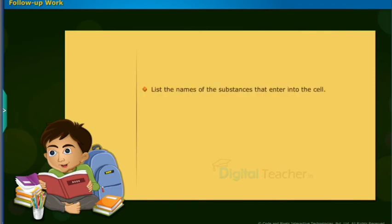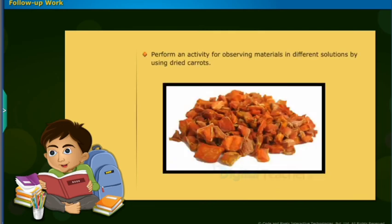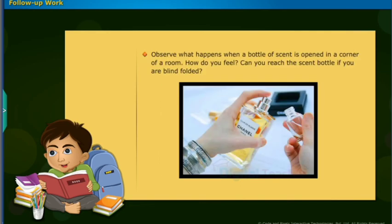List the names of the substances that enter into the cell. For example: oxygen, glucose, etc. Perform an activity for observing materials in different solutions by using dried carrots. Observe what happens when a bottle of scent is opened in a corner of a room. How do you feel? Can you reach the scent bottle if you are blindfolded?